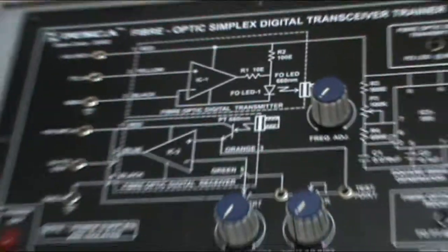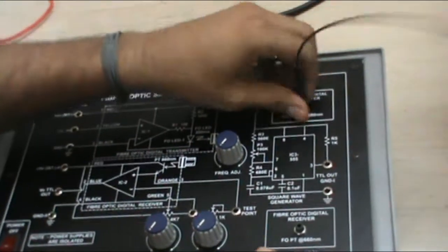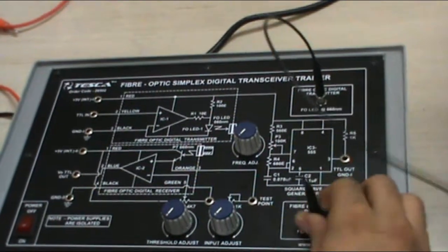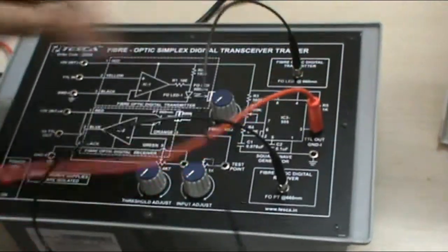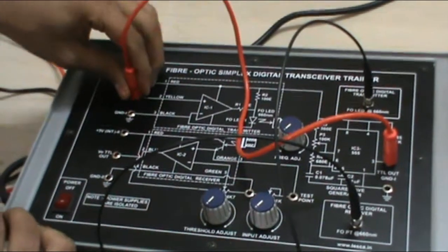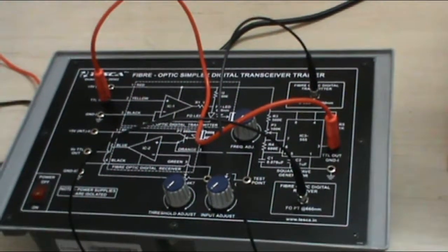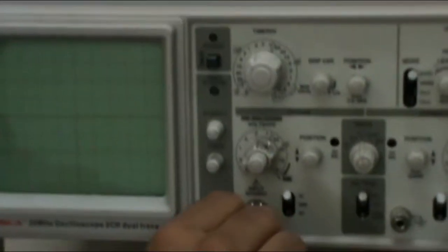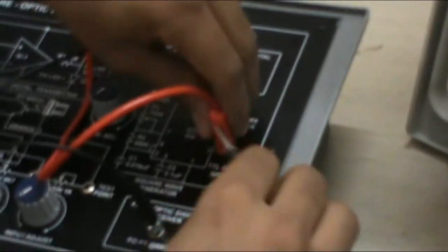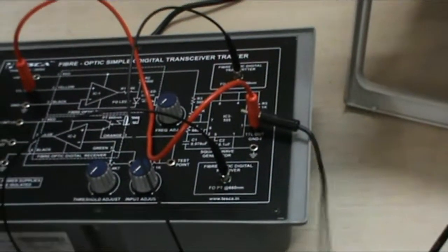Now how to make the connections. First of all, this is our fiber optic wire connected to the transmitter, connected gently and to the receiver. Now connect TTL out to TTL in. Also connect TTL out to the CH1 of the CRO. Here is the oscilloscope CRO. Connect the TTL out through this CRO cable to CH1, Channel 1. The red lead to the TTL out and the black lead to ground.